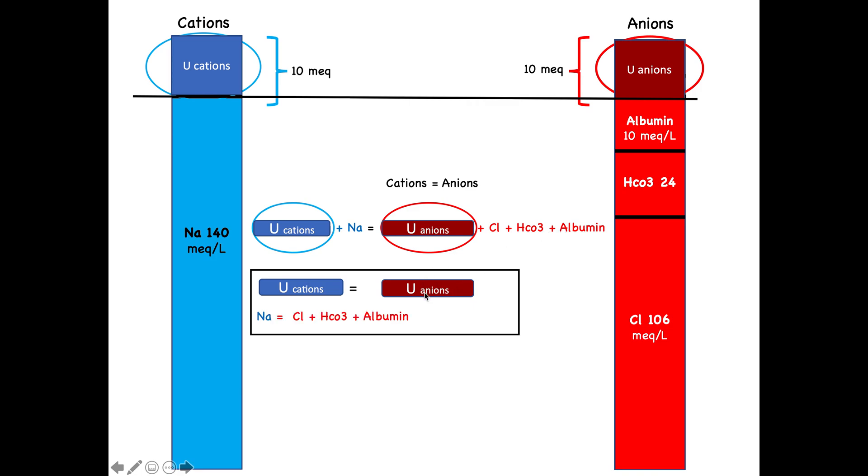What if I decide to make this equation even more simple? This albumin, I just want to make it as unmeasured ions. This albumin, I want to dissolve it in the unmeasured anionic pool. But that will leave me with a gap. A gap between the measured cation and the measured anions. And this gap is what known as anion gap.